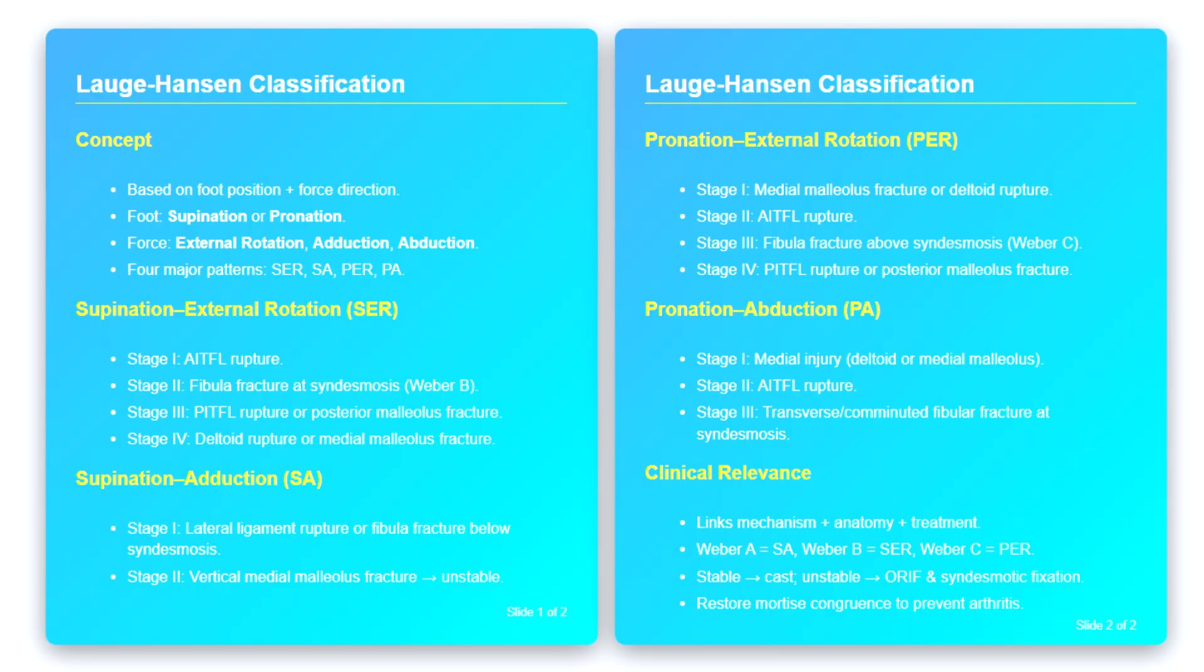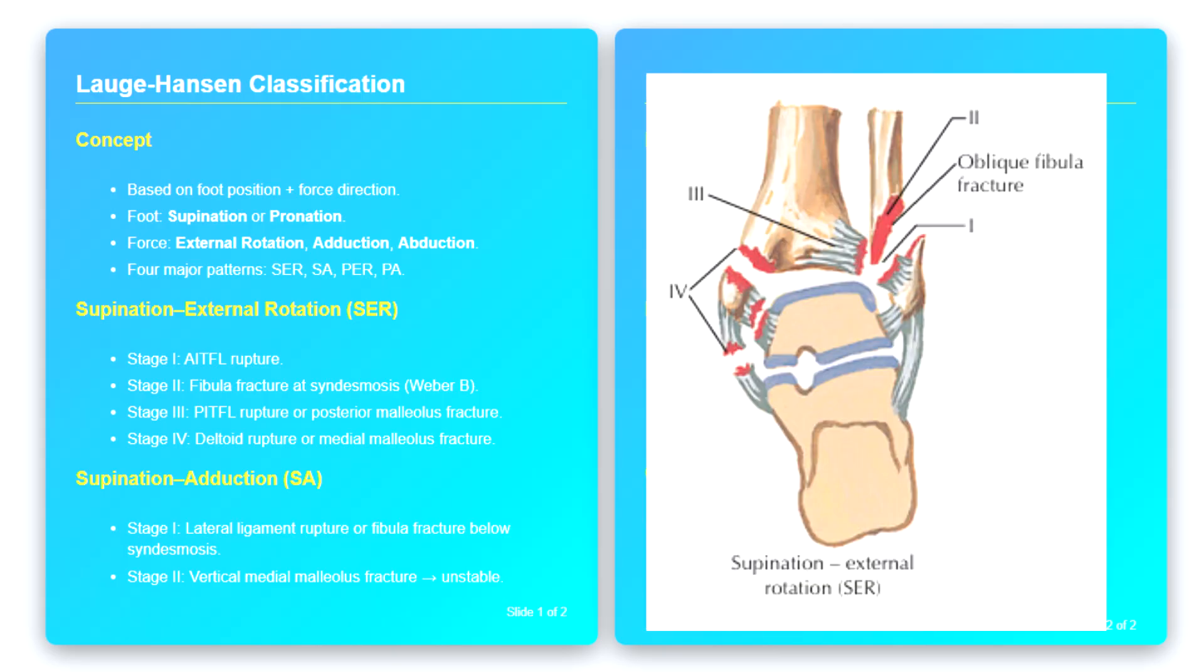Let us now examine each mechanism in turn. Supination external rotation, SER. The most common ankle fracture pattern is the supination external rotation mechanism. In this injury, the foot is in supination and an external rotational force is applied. The sequence of damage follows four stages. In stage one, the anterior inferior tibiofibular ligament, or AITFL, is torn. Radiographically, this may be subtle, but stress views may reveal widening of the syndesmosis.